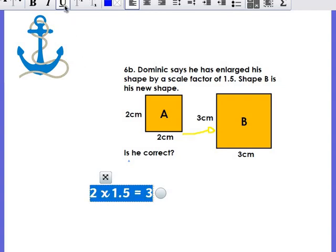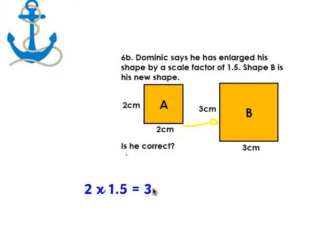The easiest way to check is to do a calculation of whatever we're times in the scale factor by from the original shape to the new shape. So two times 1.5 equals three.